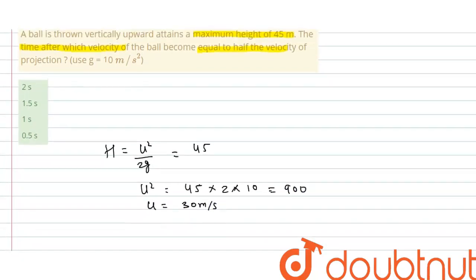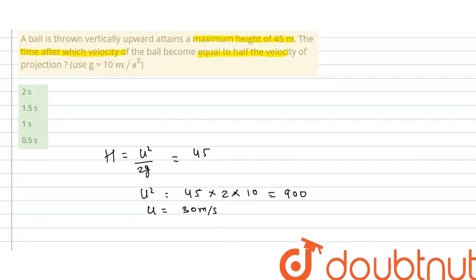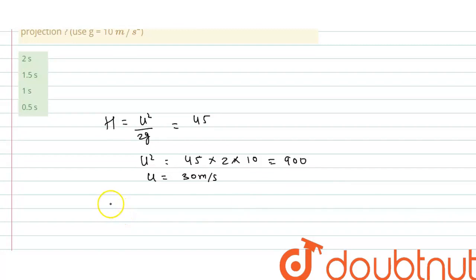Okay, now we will apply, we have to calculate time after which velocity will become half. So we will use second equation of motion, which is v equals to u plus at.